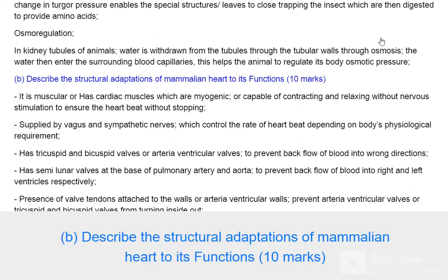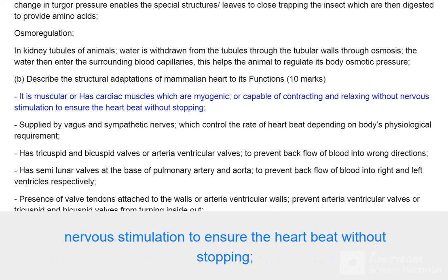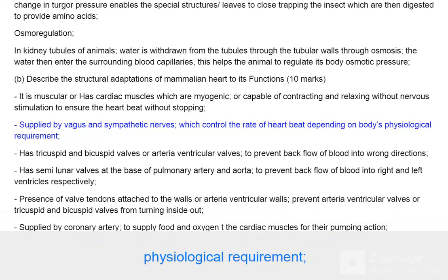Question 7B: Describe the structural adaptations of the mammalian heart to its functions. 10 marks. The heart is muscular and has cardiac muscles which are myogenic, or capable of contracting and relaxing without nervous stimulation, to ensure the heartbeat without stopping. It is supplied by vagus and sympathetic nerves, which control the rate of heartbeat depending on the body's physiological requirements.